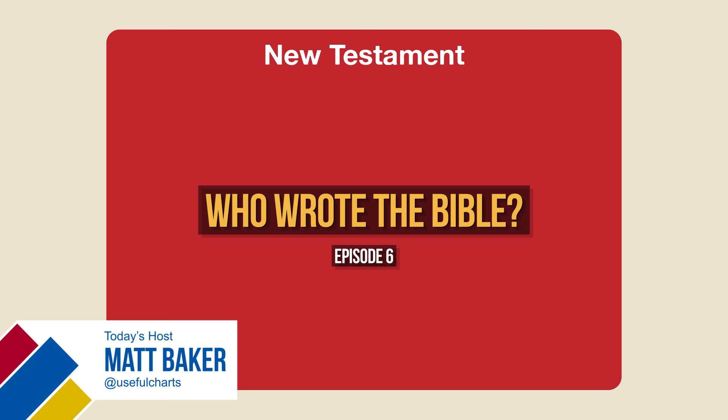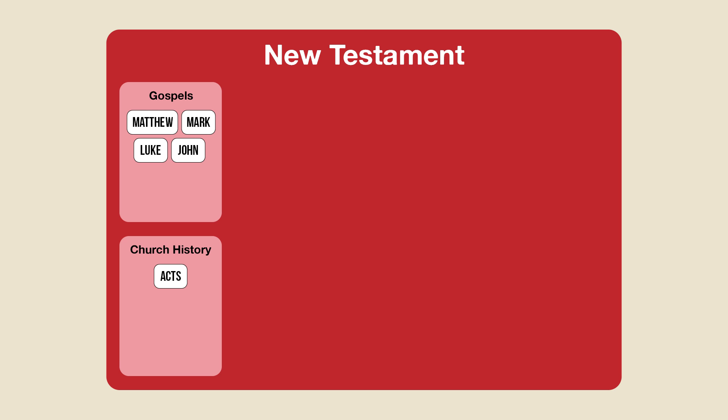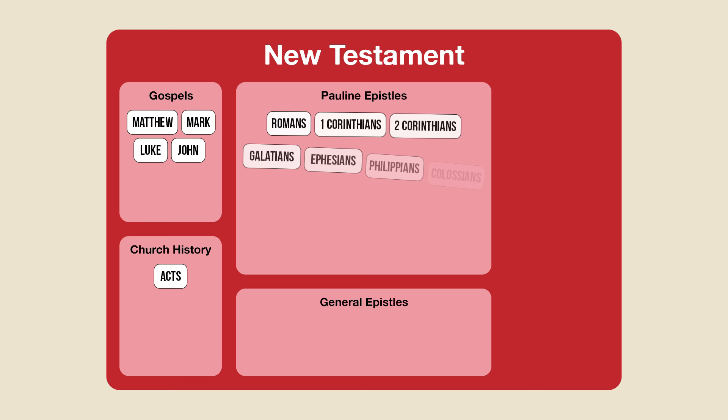Hi, this is Matt Baker. Welcome to Episode 6 in my series on Who Wrote the Bible. We're currently working our way through the New Testament, which has a total of 27 books. Last time, we talked about the Four Gospels as well as the Book of Acts. So in this episode, we're going to look at the next 21 books, which are all known as Epistles — the word epistle simply meaning a letter. Fourteen of these books have at some point been attributed to the Apostle Paul and are therefore known as the Pauline Epistles.